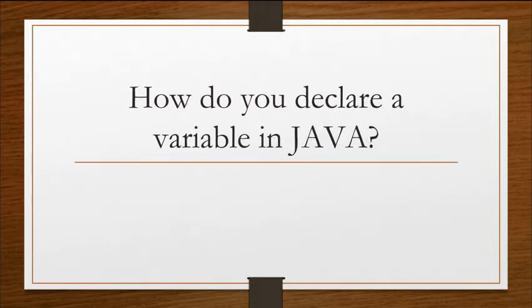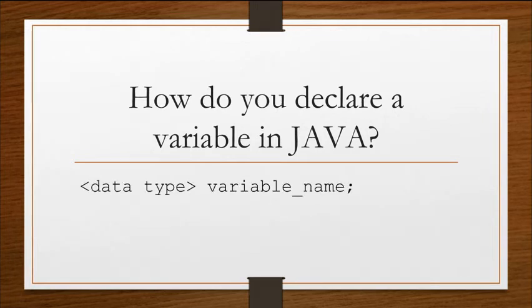In Java, we have to declare variables. So how do you declare a variable in Java? Well, you have to tell Java what type of data you're going to store in the variable, and then you have to give it a variable name. So this is the structure: a data type followed by a name.